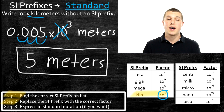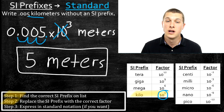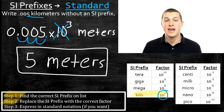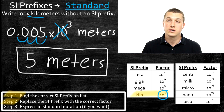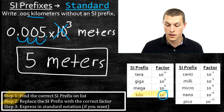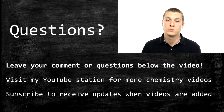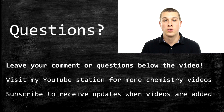In this video we've talked about what SI prefixes are — they're just a way to express numbers that are either big or small in a convenient form. We've shown how to take a number not written with an SI prefix and add one, and how to take a number with an SI prefix and remove it. That does it for this episode of Real Chemistry — please check out my YouTube channel for more chemistry videos, subscribe, and leave any questions or comments below.